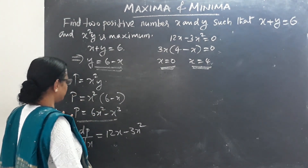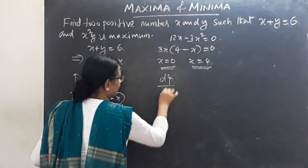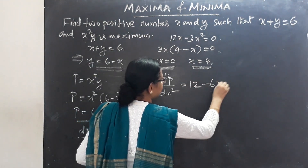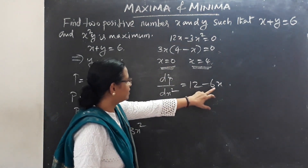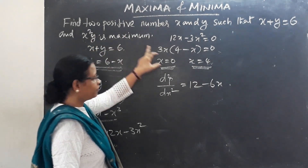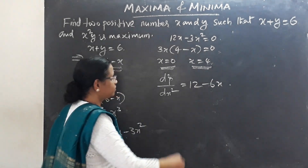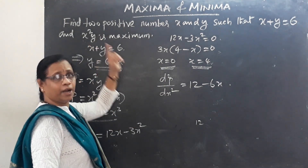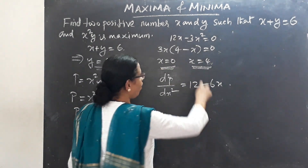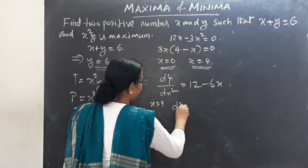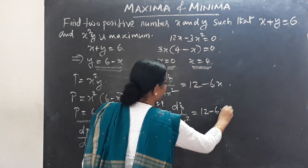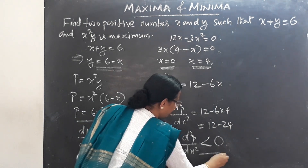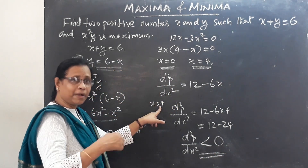We will test these two values using the second derivative. d²p/dx² equals 12 minus 6x. At x equals 0: 12 minus 0 equals 12, which is positive — so x=0 is a minimum point. At x equals 4: 12 minus 6(4) equals 12 minus 24, which is less than zero — so we have a maximum at x equals 4.